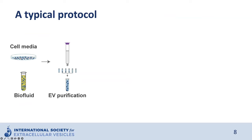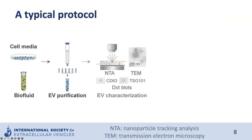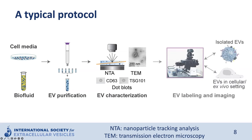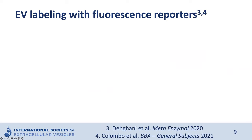In a typical protocol, we first isolate EVs from cell media or biofluid — there are many well-described methods to isolate EVs, and SMLM requires the isolated EVs to be intact and unaggregated. Next, these EVs are characterized according to the minimal information for studies of extracellular vesicle (MISEV) guidelines. Finally, EVs are fluorescently labeled, fixed, and imaged. The labeling step is not needed if EVs have been genetically labeled with a fluorescent protein. Importantly, SMLM can assess both isolated EVs and EVs in cellular environments.